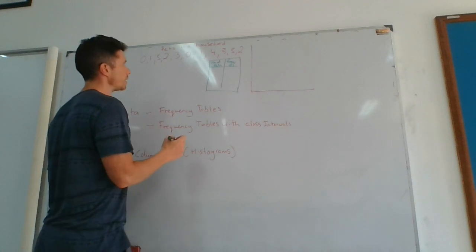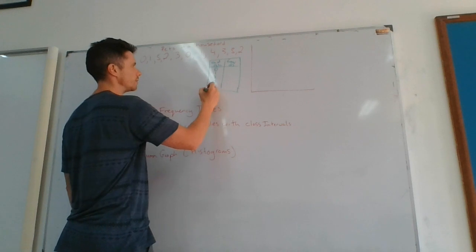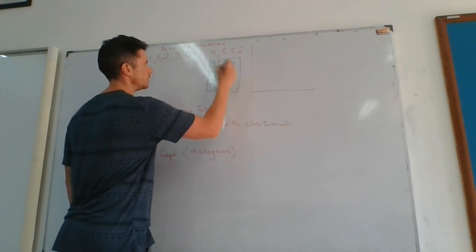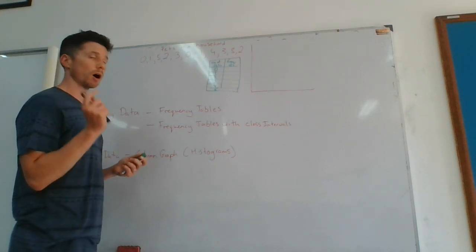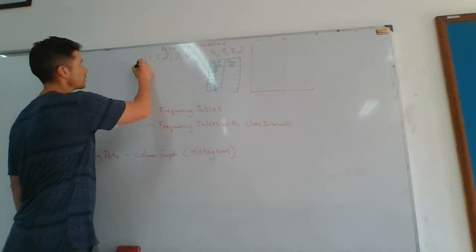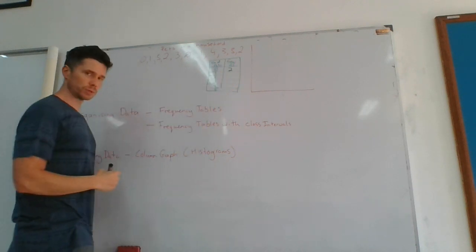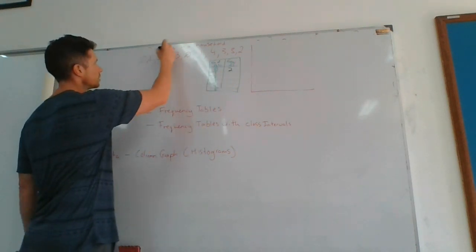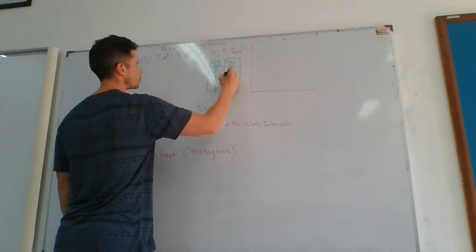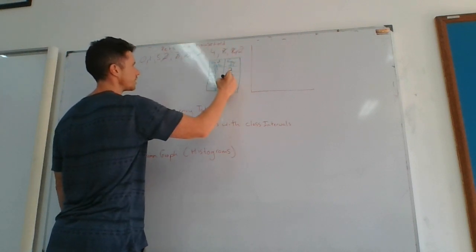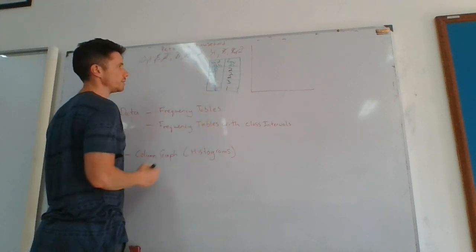Now I look at the frequency, so how often each of them occurs. So zero occurs twice, that's two zeros here, so I'm going to put in two for the frequency of zero. One occurs, it also occurs twice. Two occurs twice. Three occurs one, two, three times. Four occurs once, and five occurs once. Okay, and that is a frequency table.